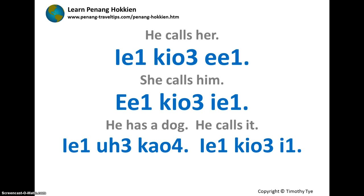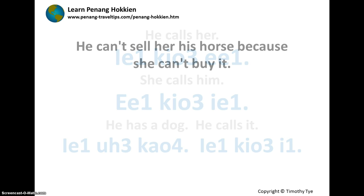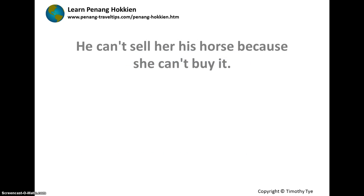The three pronouns show us the gender of each of them. With these three forms of the pronoun, we can write sentences that are quite precise. For example: he can't sell her his horse because she can't buy it. In Penang Hokkien: